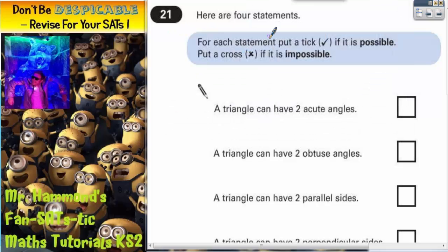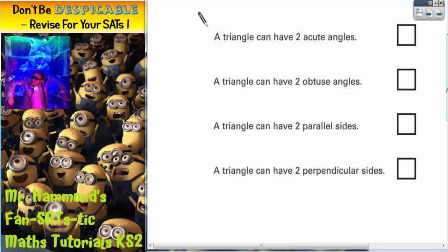Question 21. Here are four statements. For each statement, put a tick if it is possible, put a cross if it is impossible. All four statements are about triangles. Let's take each statement in turn.